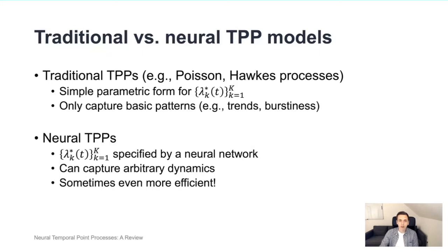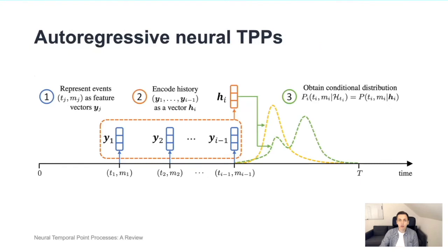Now let's have a look at how these neural temporal point processes are defined in practice. One of the two main classes of TPPs are what we call autoregressive neural TPPs. These models define the conditional intensity somewhat implicitly by actually considering the conditional distribution of the next event in the sequence, given the history of the past events. This process consists of three main parts. First, we have to represent each event in the event history by a feature vector, yj. Then, given the sequence of the feature vectors corresponding to the past events, we have to encode them into a single representation that we call hi, which is the history encoding. And finally, given this history encoding, we have to parameterize the conditional distribution over the next event in the sequence.